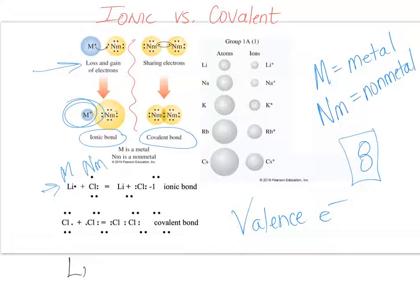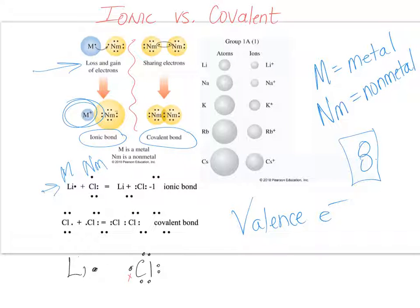Consider lithium and chlorine interacting using electron dot structures. Lithium has one valence electron — one dot. Chlorine is in column 7A, so it has seven dots. Neutral chlorine has seven valence electrons and just needs one more to have a filled highest level. Lithium happens to have exactly that one electron.